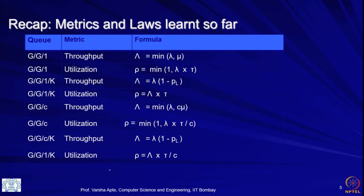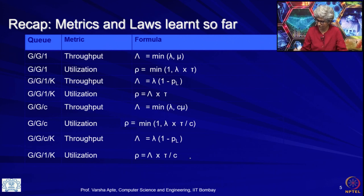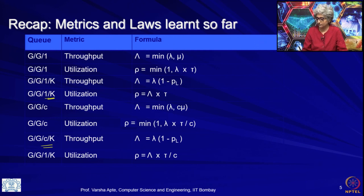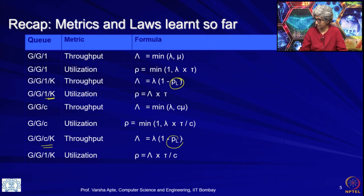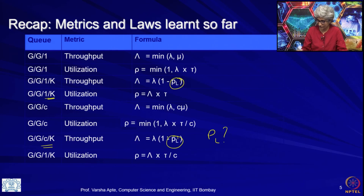What we want to do today is — for all of these, first, throughput and utilization for the finite buffer queuing systems we do not really know what they are. For example, for GG1k the throughput is given in terms of p_l, and even for GGck the throughput is given in terms of p_l. So what is p_l? I have not told you yet. Remember that p_l is probability of loss — request loss.